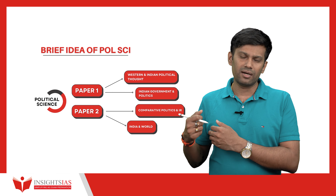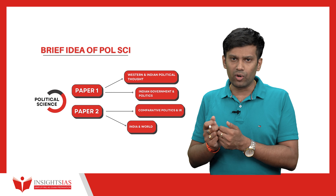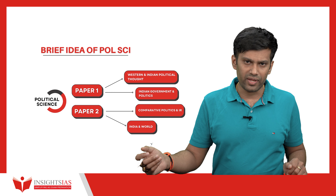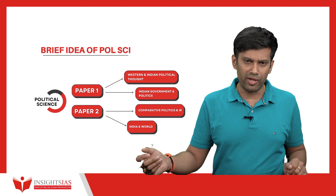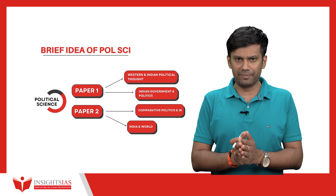For Indian Political Thought, we study ideas of Manu, Kautilya's Arthashastra, M.N. Roy, Sir Syed Ahmad Khan, Gandhi, Ambedkar, and Aurobindo Ghosh. These are the major Indian thinkers. The same approach applies here — we are only covering their important political ideas, not everything they ever wrote.